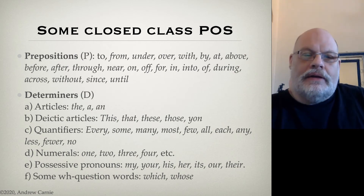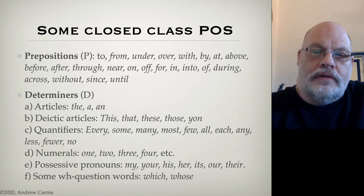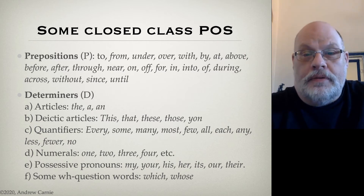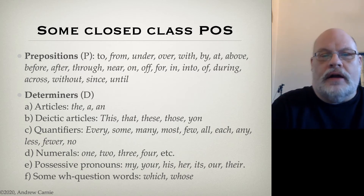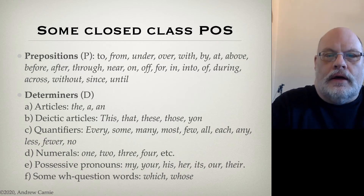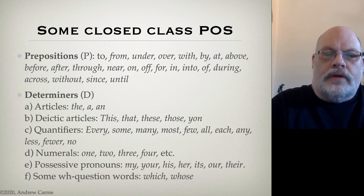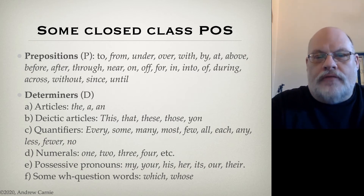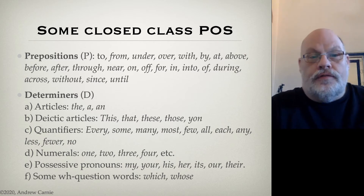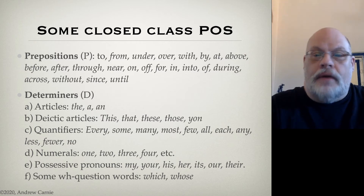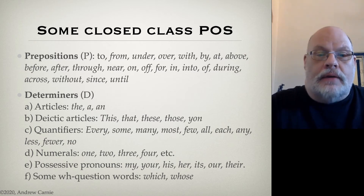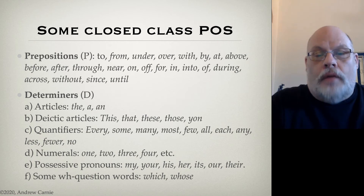So with that in mind, let's talk about some closed class parts of speech — in particular, some functional categories. Prepositions are an example of a closed class functional category. These are words that relate noun phrases either to verbs or to other nouns. Examples are: to, from, under, over, with, by, at, above, et cetera. In linguistics, we indicate the preposition category with the abbreviation P.